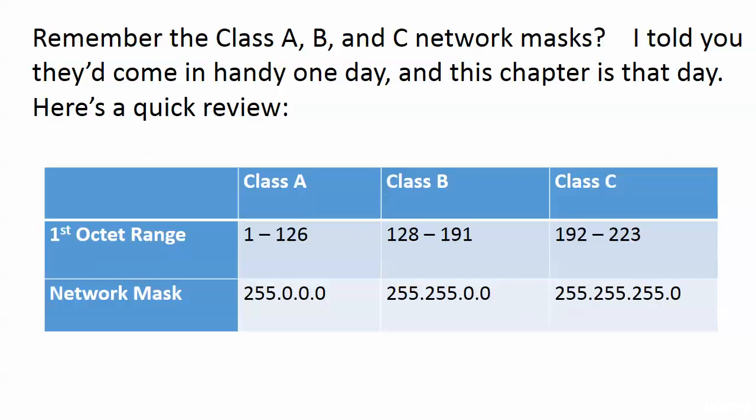Remember these - Class A, B, and C network masks and ranges. I told you they'd come in handy one day. Here's a quick review: Class A first octet is 1-126, network mask is 255.0.0.0 or slash 8. Class B first octet range is 128-191, network mask is slash 16. Class C first octet range is 192-223, network mask is slash 24 or 255.255.255.0. See, it is easier to say slash 24.